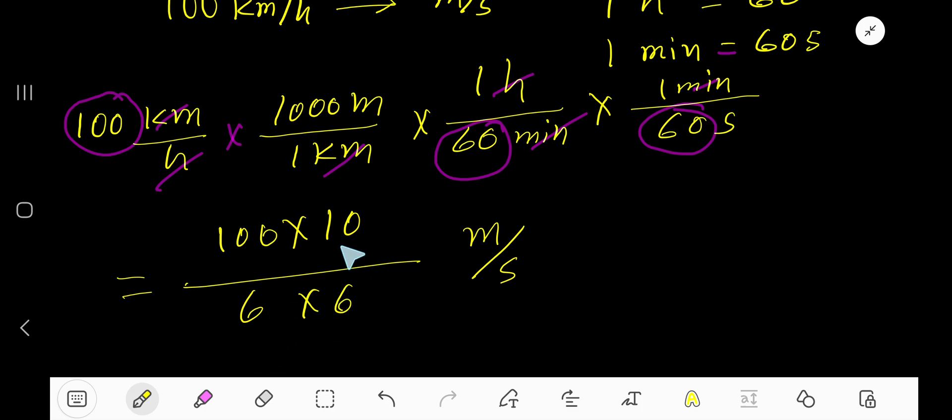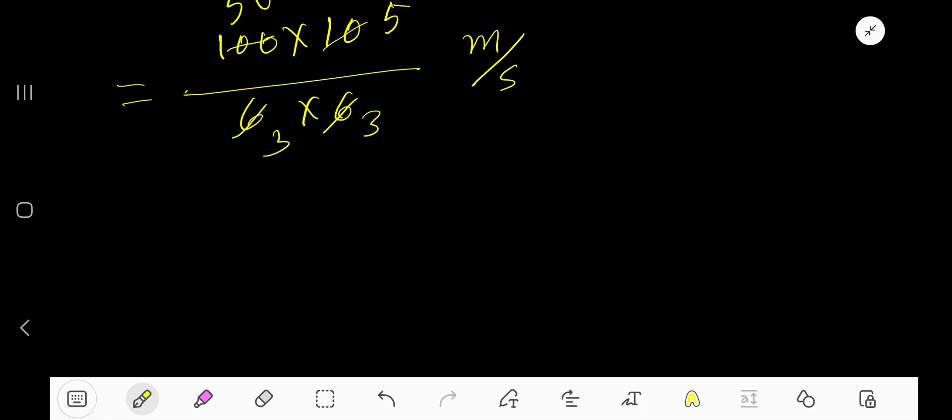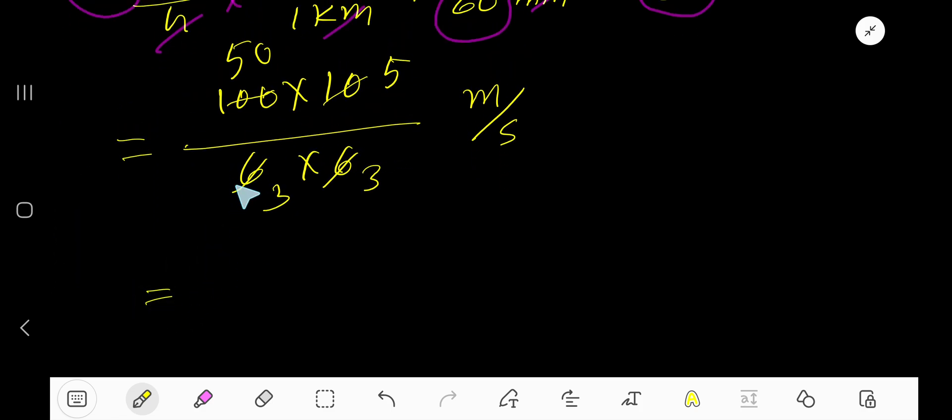Divide this 10 by 2, you'll get 5. Divide this 6 by 2, you'll get 3. Divide this 6 by 2, you'll get 3. Divide this 100 by 2, you'll get 50. So basically we are getting 50 times 5 equals 250 divided by 3 times 3, which is 9, meters per second.